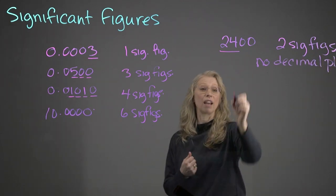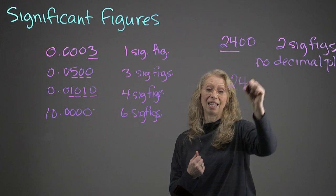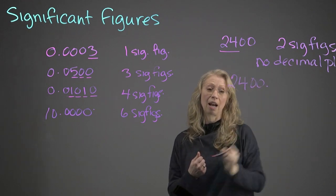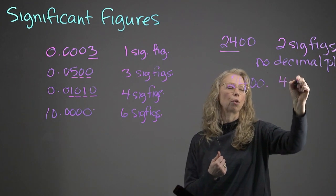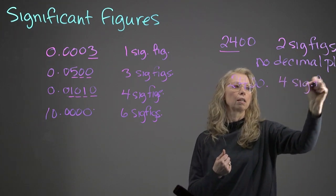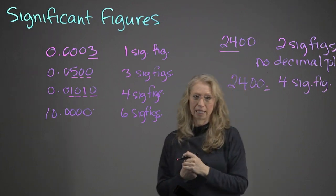All right, if I say it is 2,400, and I'm confident in that value, we can now say it has four sig figs, because now it has a decimal place.